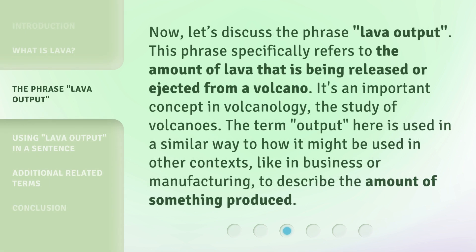Now, let's discuss the phrase lava output. This phrase specifically refers to the amount of lava that is being released or ejected from a volcano. It's an important concept in volcanology, the study of volcanoes. The term output here is used in a similar way to how it might be used in other contexts, like in business or manufacturing, to describe the amount of something produced.